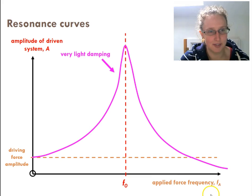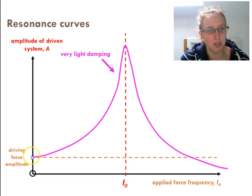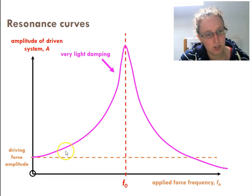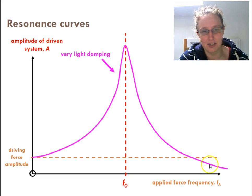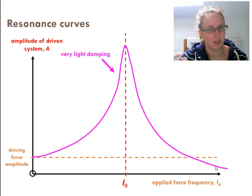With very light damping, if I apply a driving force at a frequency much below the natural frequency, I get fairly small amplitudes — basically just the amplitude I put in. As I get closer to the natural frequency, the amplitude of the oscillations gets much, much higher, coming to a sharp peak and then back down. If I go too fast, the oscillations almost disappear because you're pushing it so fast that it hasn't got time to go anywhere.